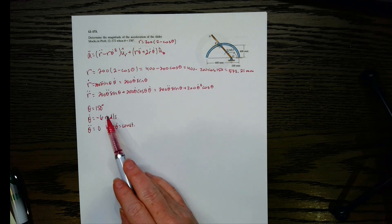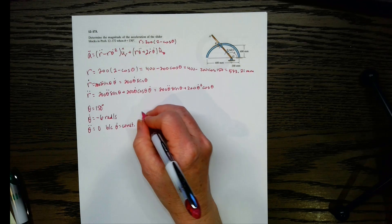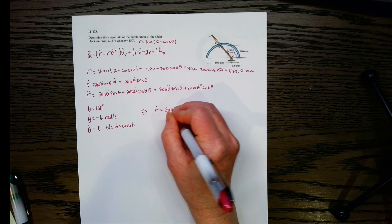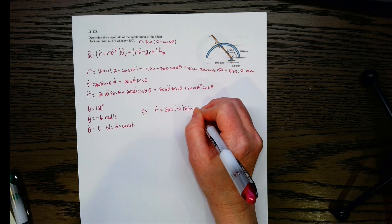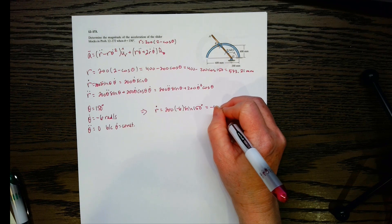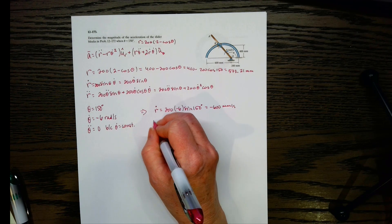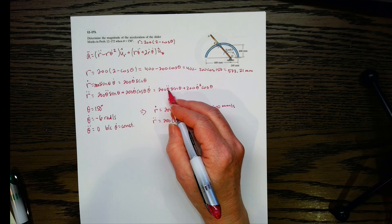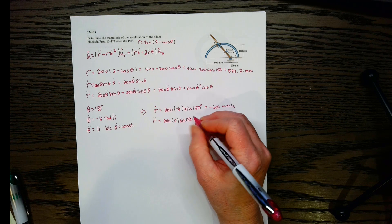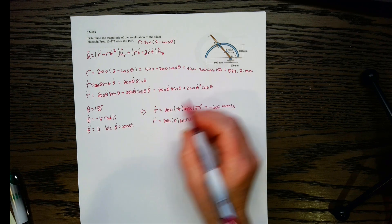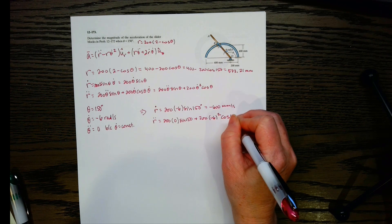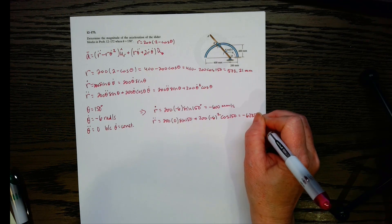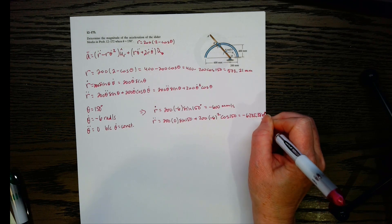Plugging in values: R-dot equals 200 times negative 6 times sine 150, which gives negative 600 millimeters per second. R-double-dot equals 200 times zero times sine 150, plus 200 times negative 6 squared times cosine 150, which equals negative 6,235.38 millimeters per second squared.